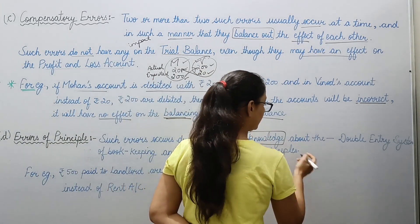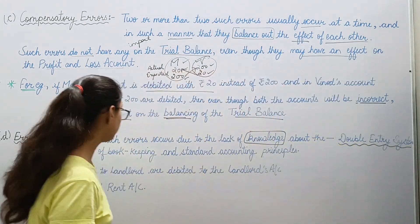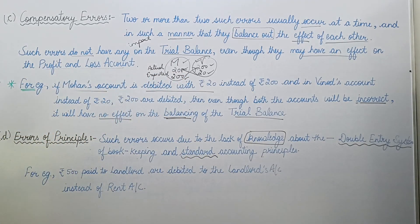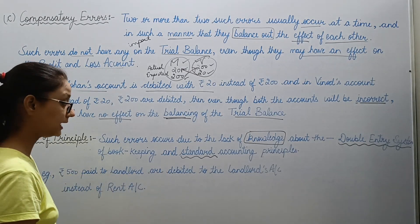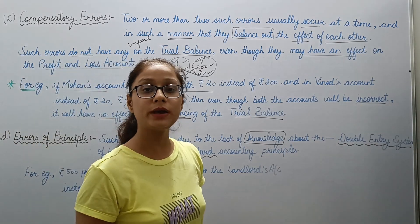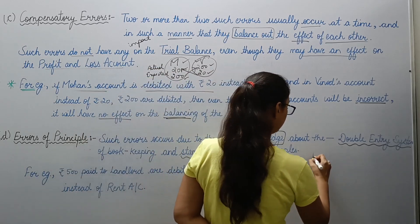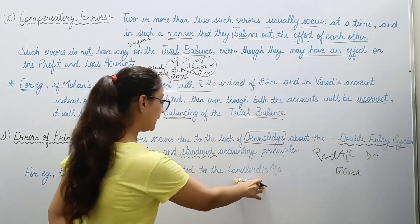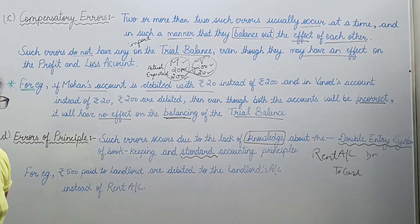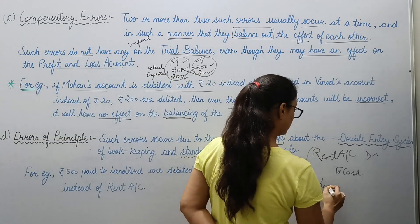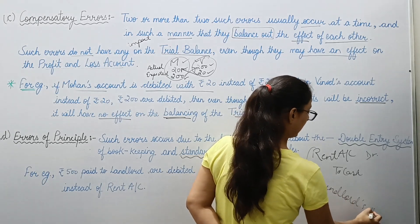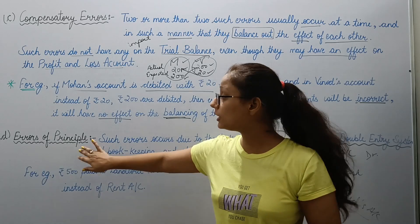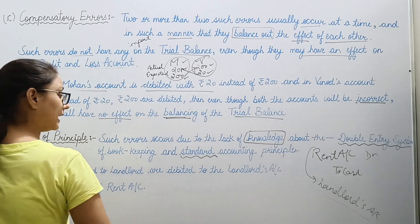These errors occur due to lack of knowledge about the double entry system. The person making the entry doesn't have knowledge of how to correctly apply the double entry system to cash account and related entries.